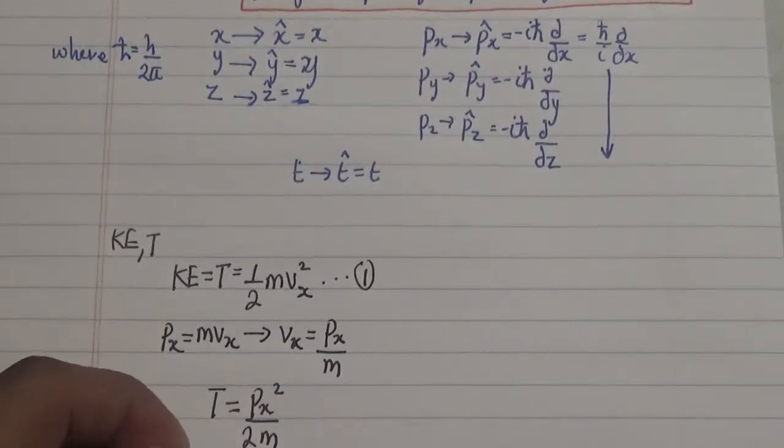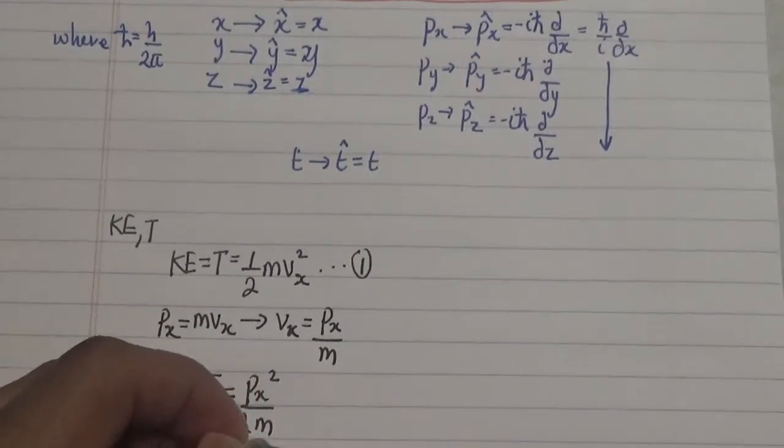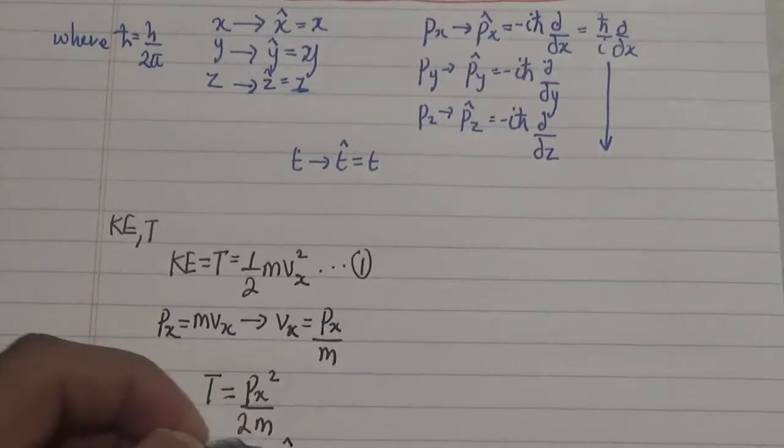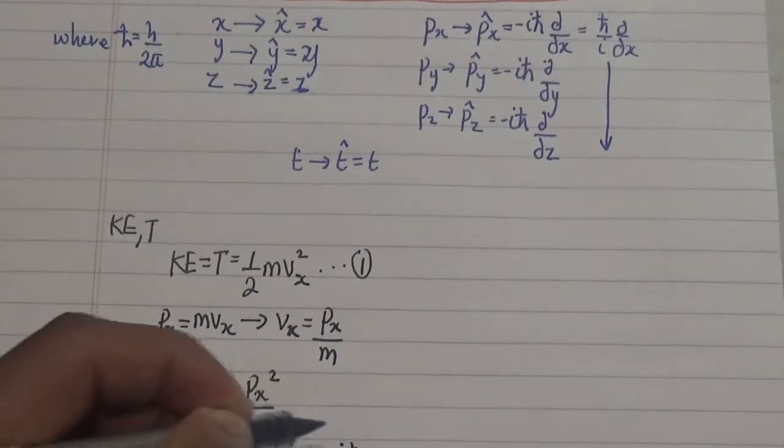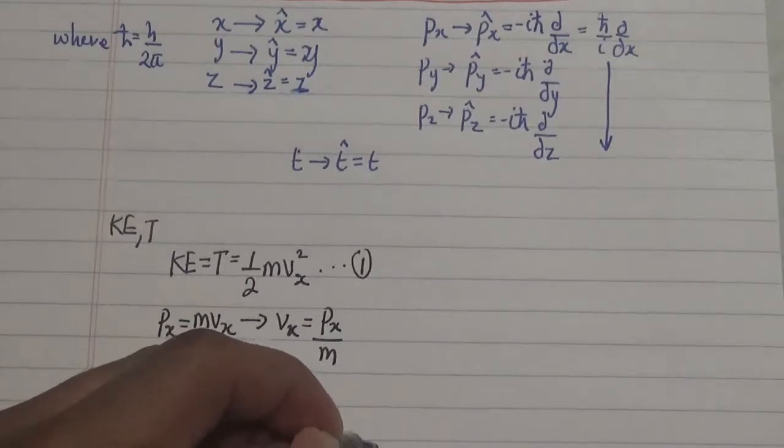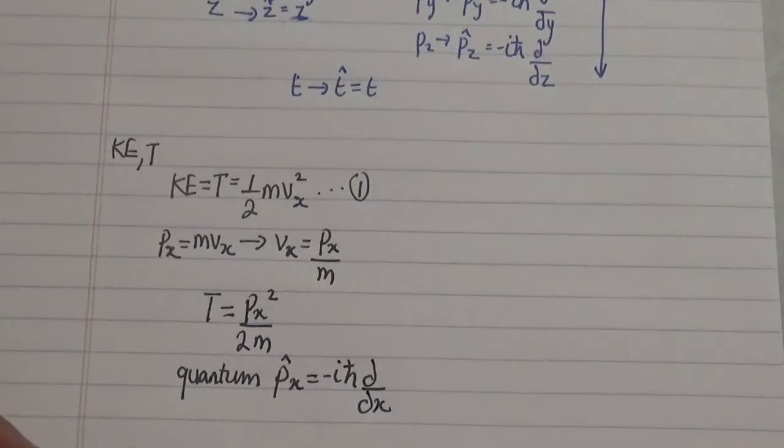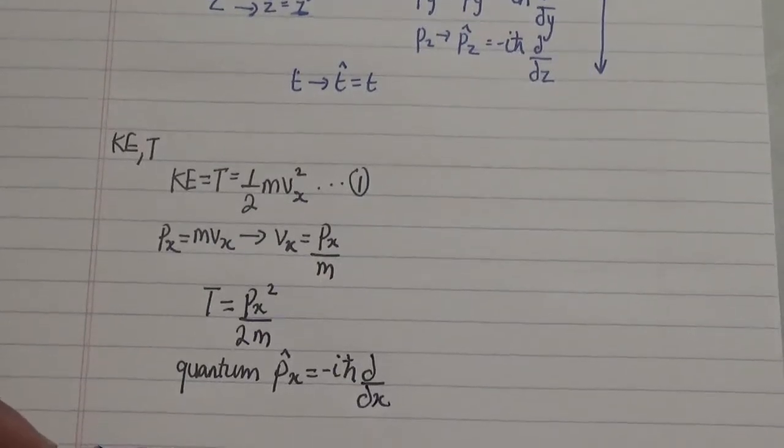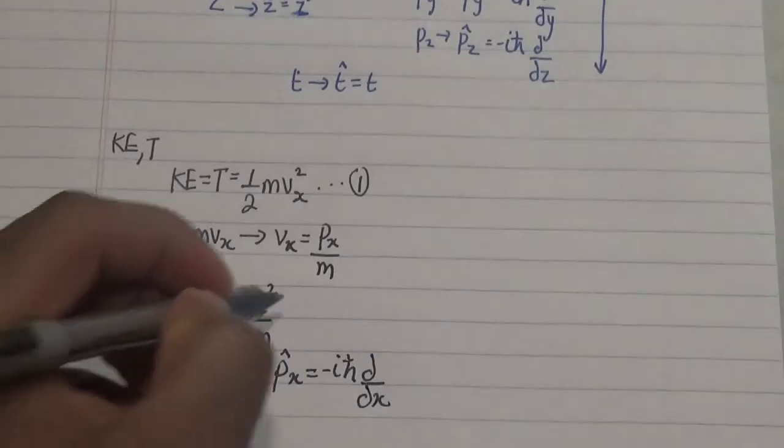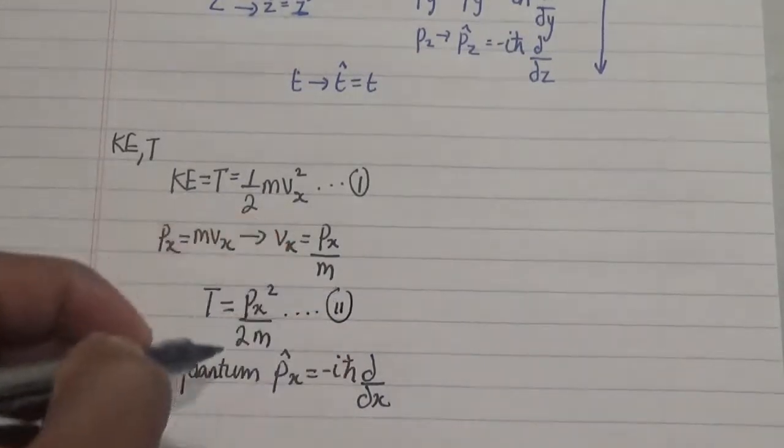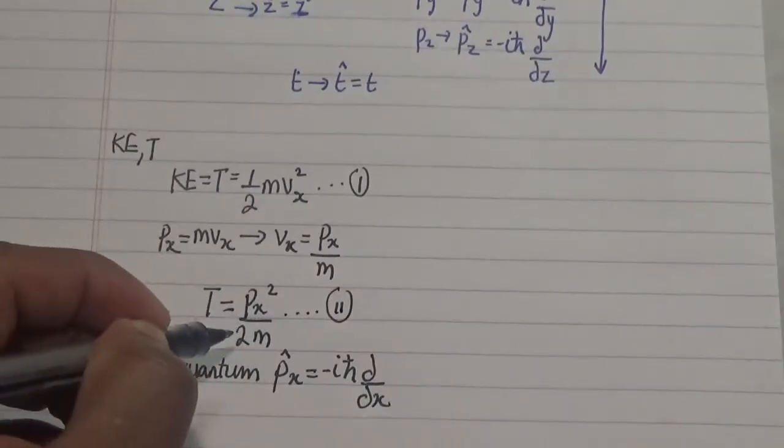Now where quantum momentum expression, P in the x coordinate is equal to negative i h bar multiplied by the derivative with respect to x of the eigenfunction, which is what we have written over there. Let's substitute that into equation 2 to transform this into a quantum expression.